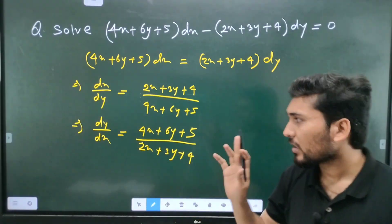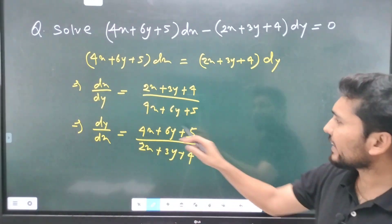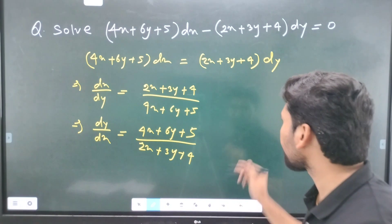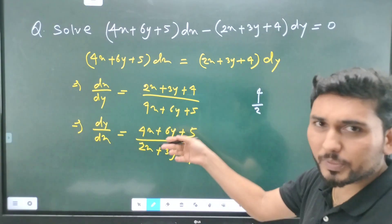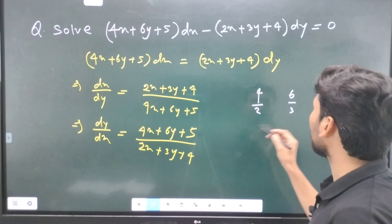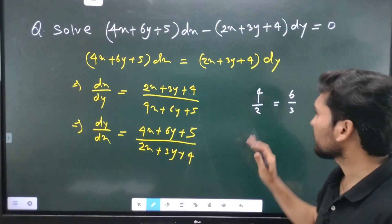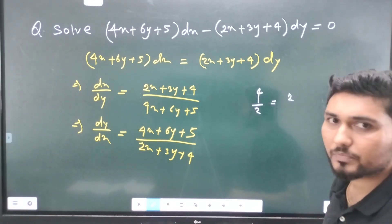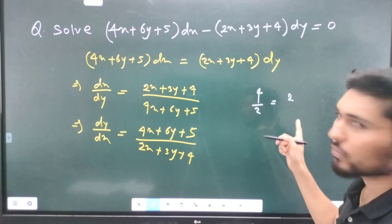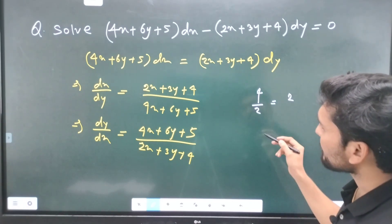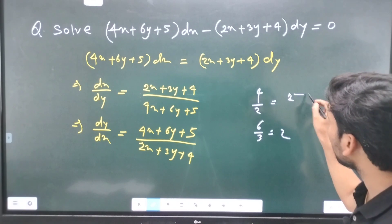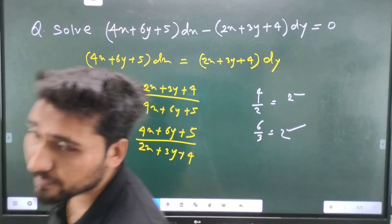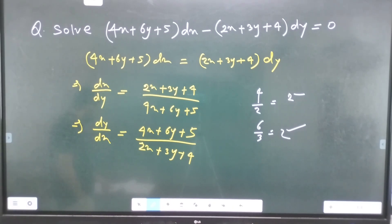We have to write x as well as y. The coefficient of x is 4, and the coefficient of x in the denominator is 2, so the ratio is 4 by 2. The coefficient of y is 6 by 3. So the coefficient ratio of x and the coefficient ratio of y are the same — both equal 2. We cannot separate them directly because the ratios are equal.